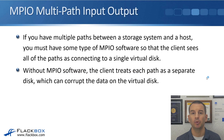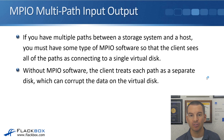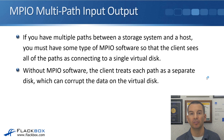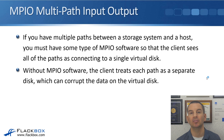If you have multiple paths — which you should for redundancy — between the storage system and a host, you must have some type of MPIO software on the client so that the client sees all of the paths as connecting to a single virtual disk. Without MPIO software, the client treats each path as a separate disk, which can corrupt the data. Going back to the previous example with eight paths, if you configure a LUN for that client, it can end up seeing eight LUNs rather than just the one actual LUN. So you need MPIO software installed for this to work correctly.